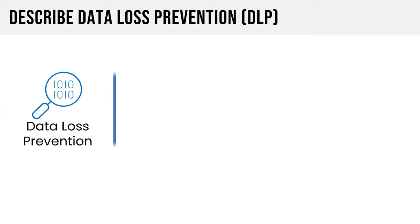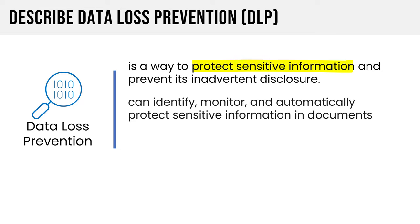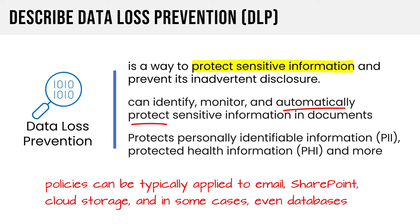Data loss prevention is a way to protect sensitive information and prevent its inadvertent, think unintentional, disclosure. DLP solutions can identify, monitor, and automatically protect sensitive information and documents. We're really talking about protecting personally identifiable information, protected health information, customer information, any sort of sensitive business data. With DLP software, you can typically create policies that you can apply to email, to your SharePoint portals, to cloud storage, and in some cases even to databases. These policies will typically have canned formulas to identify different types of data, like PII, protected health information, credit card data, or they'll provide you the ability to write your own regular expressions to identify what you consider sensitive.